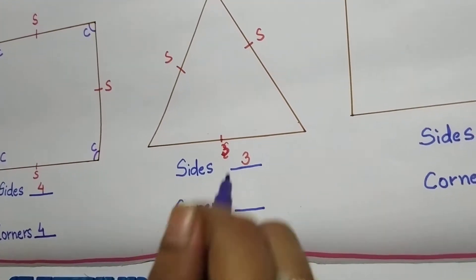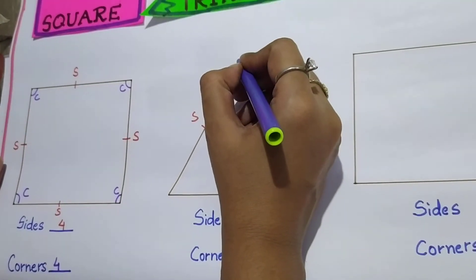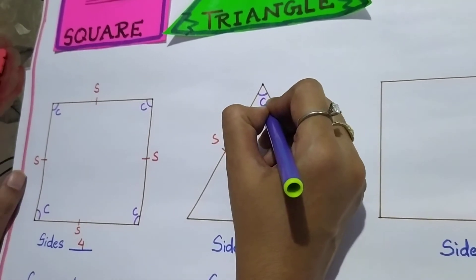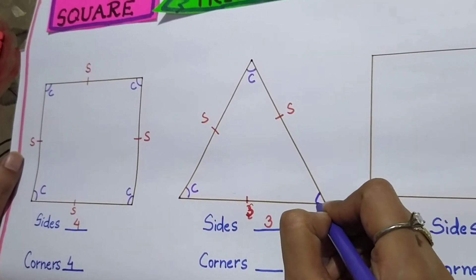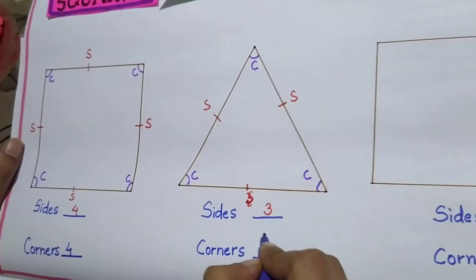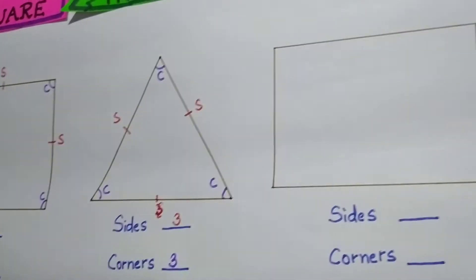And number of corners will be? Here, these two lines are making a corner. So it is one, this is two and this is three. So the number of corners in a triangle will be three.